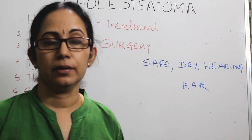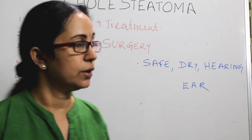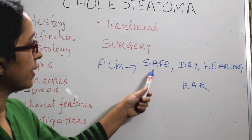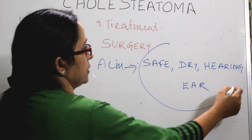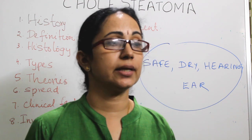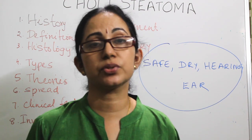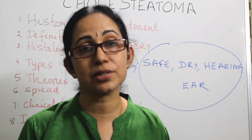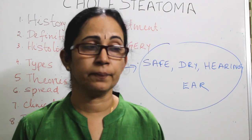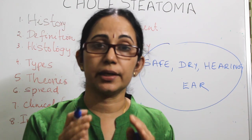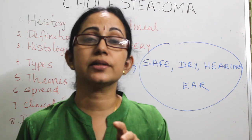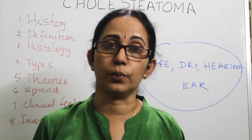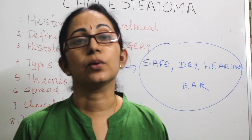Treatment: there is no medical treatment for cholesteatoma — treatment is surgery. The aim of surgery is to create a safe, dry, hearing ear. Conservative management can only be tried when the patient is critically ill and unfit for surgery, unwilling for surgery, or the risk outweighs the benefit. In cases where the external auditory canal is very wide and the fundus of the retraction pocket is visible, regular suction clearance and aural toileting can be advised if the patient can attend regular follow-up.